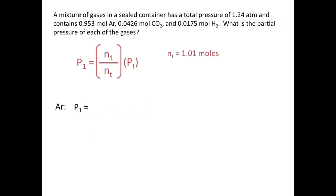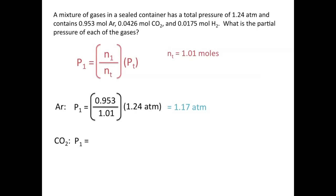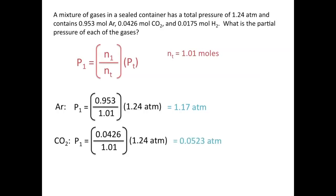To find the partial pressure of argon, we take the mole fraction of argon: 0.953 divided by the total number of moles, 1.01, multiplied by the total pressure, 1.24 atmospheres. The partial pressure of argon is 1.17 atmospheres. For CO2, the mole fraction is 0.0426 divided by 1.01, times 1.24, which equals 0.0523 atmospheres — the partial pressure of CO2.